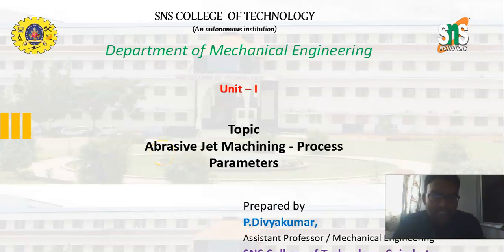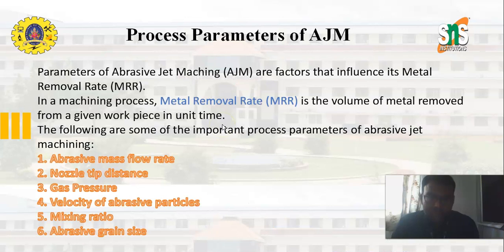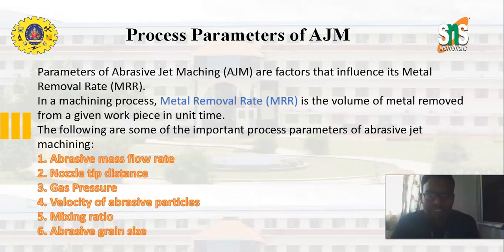Good morning. In this video lecture series, we are going to discuss about abrasive jet machining process parameters. Parameters of abrasive jet machining are the factors that influence its metal removal rate. In a machining process, metal removal rate is the volume of metal removed from a given workpiece in unit time. The following are some of the important process parameters of abrasive jet machining process.